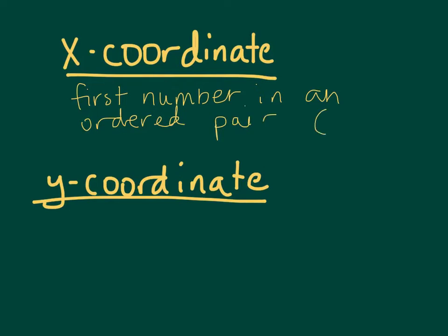For example, if we have 2 comma 5, 2 is our x coordinate. Then our y coordinate is therefore the second number in an ordered pair.